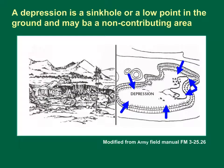A depression is a sinkhole or low point in the ground. Think of a depression as an upside-down hill. If you stand in the center of a depression, you will have higher ground in all directions. A map represents a depression with contour lines forming concentric circles, with tick marks pointing to lower ground.